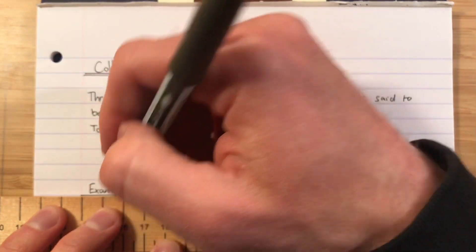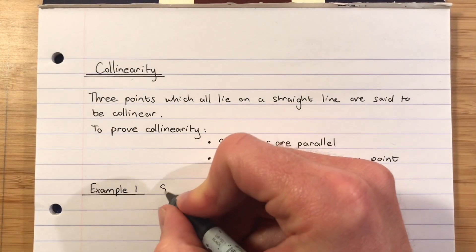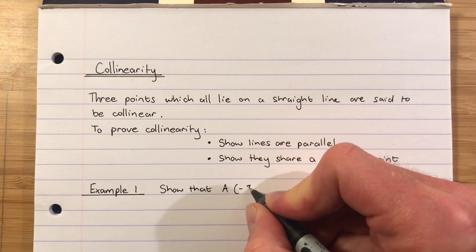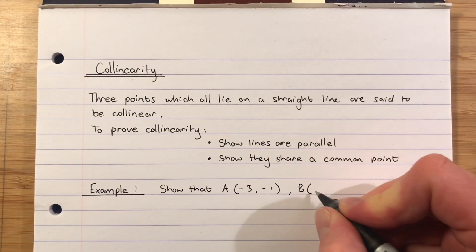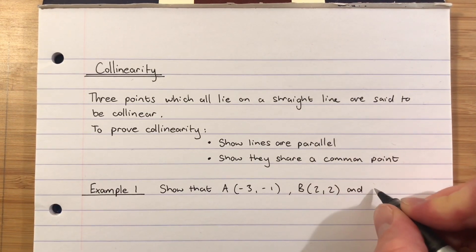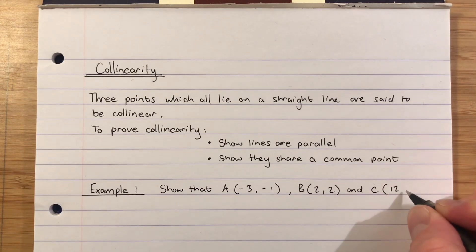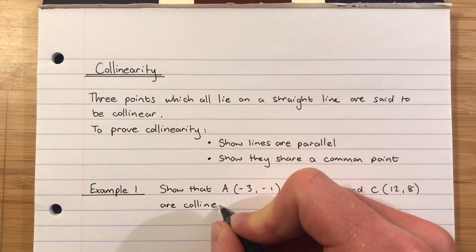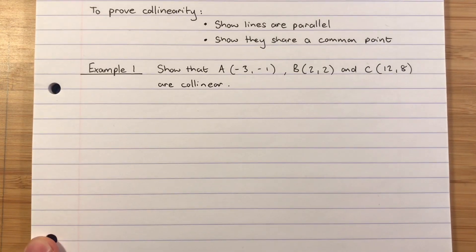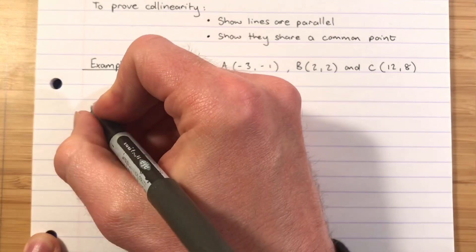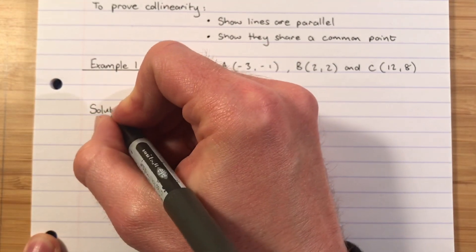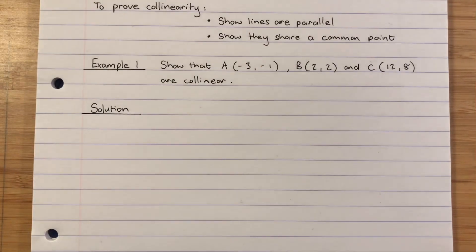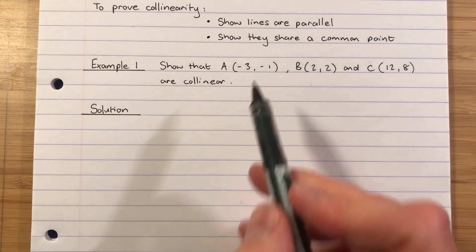Example one: show that A(-3, -1), B(2, 2), and C(12, 8) are collinear. We want to show those three points lie on a single straight line. We'll find the gradient between A and B, then the gradient between B and C, and show those lines are parallel.